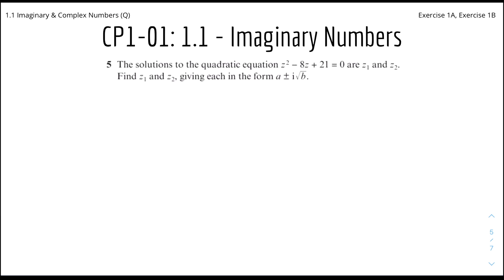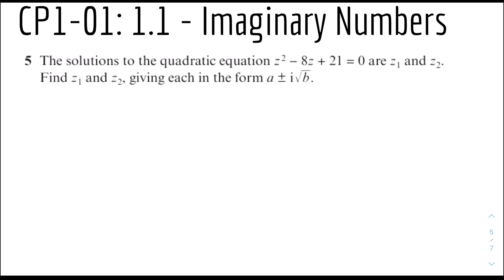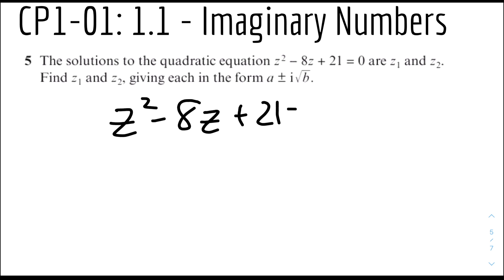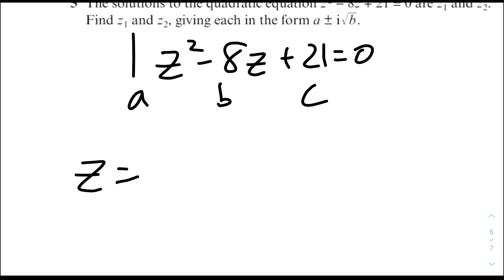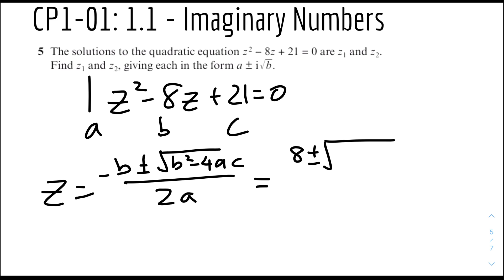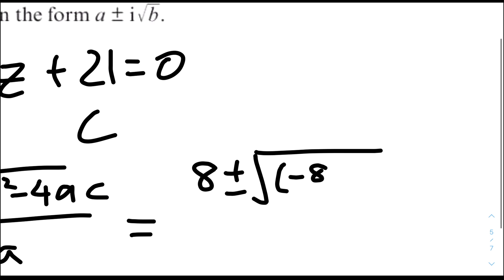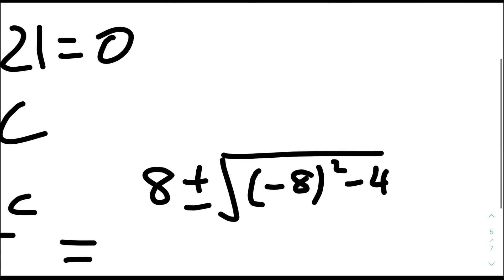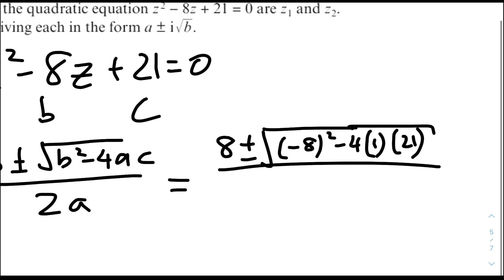Moving on, question 5 from exercise 1B: the solutions to z squared minus 8z plus 21 equals 0 are z1 and z2 — find the roots in the form a plus i root b. We use the quadratic formula. Here a equals 1, b equals minus 8, c equals 21. So z equals (minus b plus or minus root(b squared minus 4ac)) over 2a, giving z equals (8 plus or minus root(64 minus 84)) over 2.